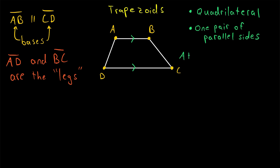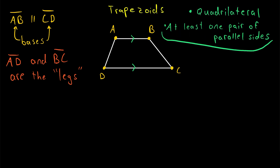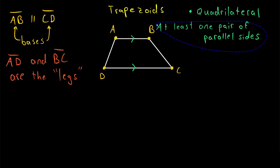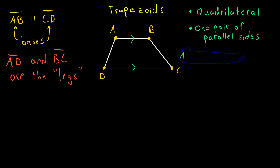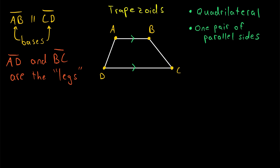Some authors define a trapezoid not as a quadrilateral with exactly one pair of parallel sides, but instead as a quadrilateral with at least one pair of parallel sides. By this definition, parallelograms, including squares and rectangles, are just special types of trapezoids. But for this lesson, we're going to use the definition that says a trapezoid is a quadrilateral with exactly one pair of parallel sides. If you're taking a geometry course, be sure to check your textbook to see which definition it uses. This is sometimes called the exclusive definition because it excludes parallelograms, whereas the other is called the inclusive definition because it includes parallelograms as trapezoids.